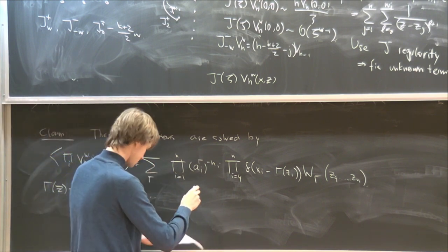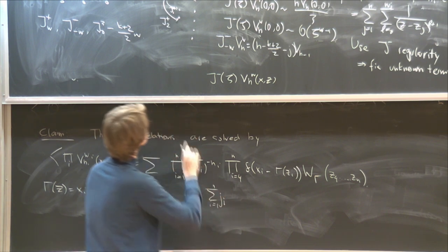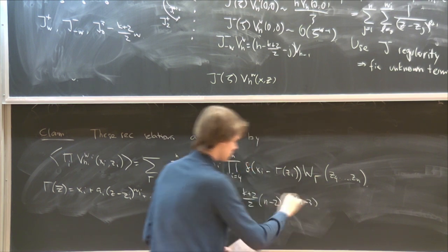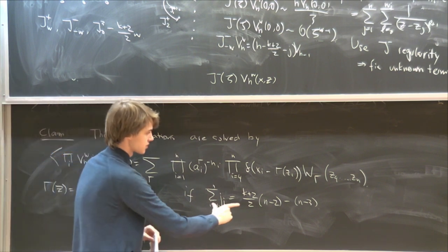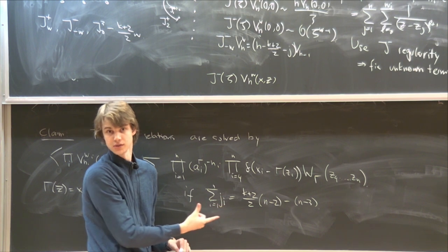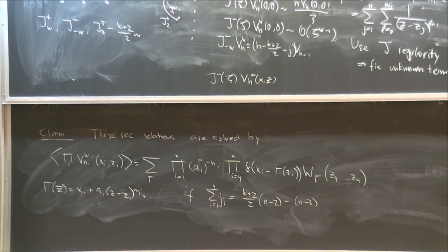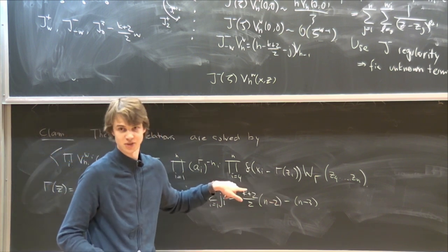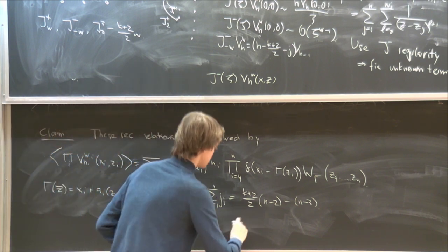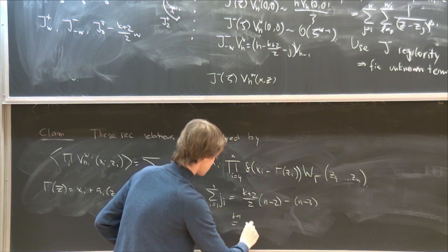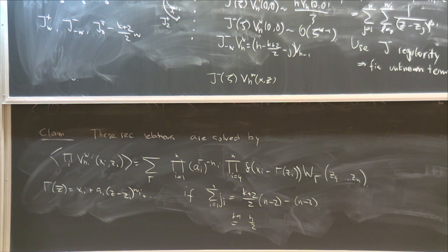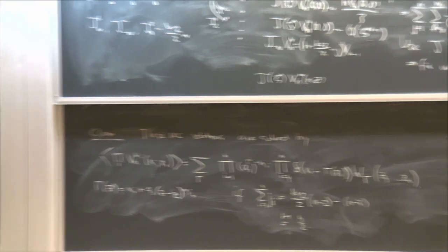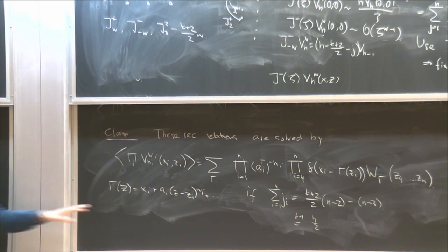There is one caveat: this is true if the sum of all the J's — the SL(2,R) spins — equals K/2+1 minus N/2 minus N−3/2 or similar. This constraint in general is not true. For K bigger than 1, there's no way of satisfying it within the physical string spectrum. But if K=1, the right-hand side simplifies a lot and just gives N/2, so this constraint is always satisfied. For K=1, the only physical states have J=1/2, and the constraint is always satisfied.